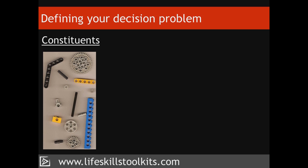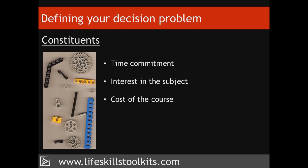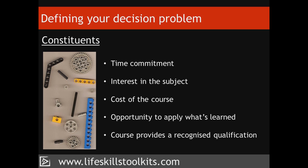Constituents. Breaking your problem down into pieces helps you to identify what is at its core, which will then help you to reach a decision that meets your needs. For instance, when deciding whether to enrol on a part-time course, things that may influence your decision might include the time commitment, your interest in the subject, the cost of the course, the opportunity to apply what you've learned, and whether or not the course provides a recognised qualification. Finding those parts of the problem that are important to you makes the problem more specific, which can then be leveraged in the next step of the PROACT process – objectives.